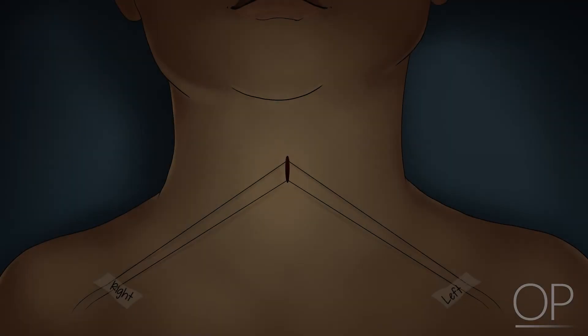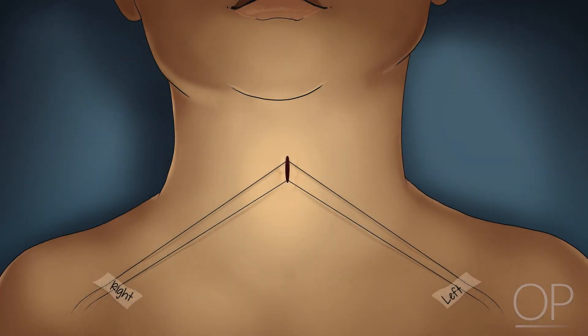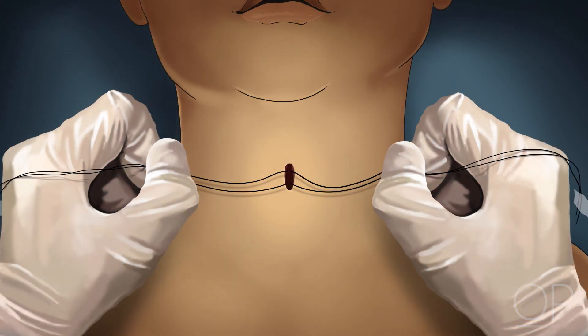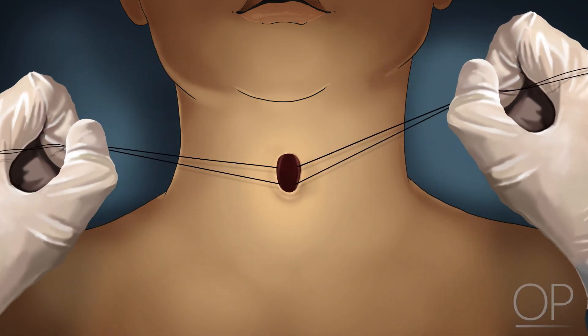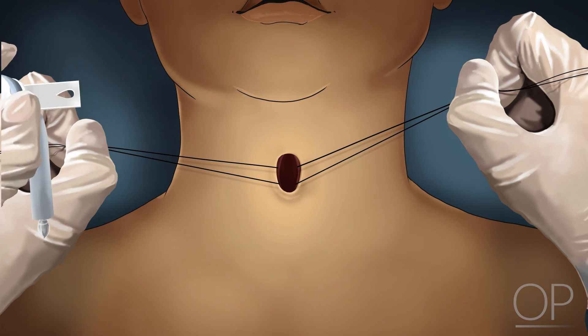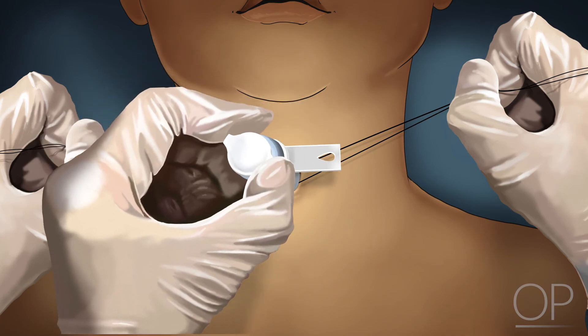If this is a fresh trach, prior to the first trach change, stay sutures will still be in place. These are two sutures that are placed during the procedure on either side of the opening into the trachea. They will be taped to the patient's neck or chest and marked right and left, or less frequently, up and down, based on which side of the tracheostomy hole they are attached to. To aid with insertion, they are untaped from the chest, grasped securely, and then pulled up and outwards in the direction indicated on the marking. This will bring the trachea up to the skin and open the stoma like a book, significantly aiding reinsertion. After the first tracheostomy tube change, stay sutures are typically removed, because the tract is usually matured and the stay sutures are not required.